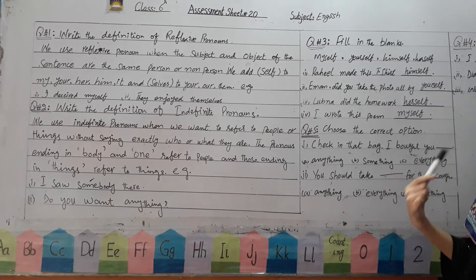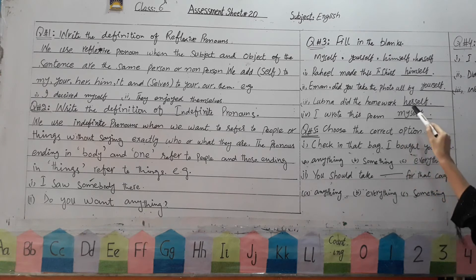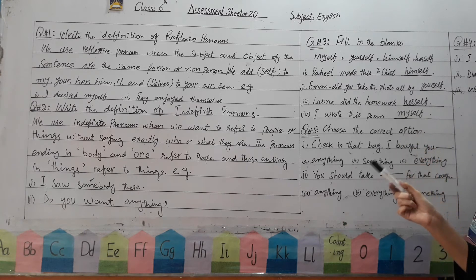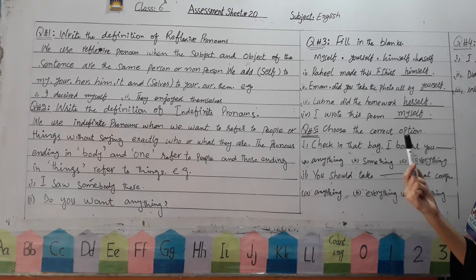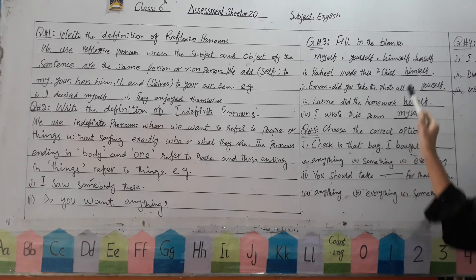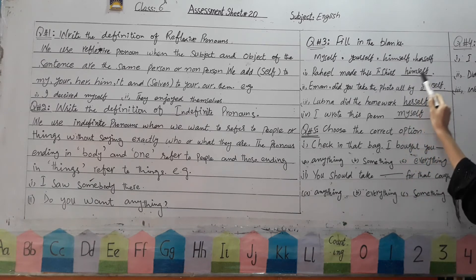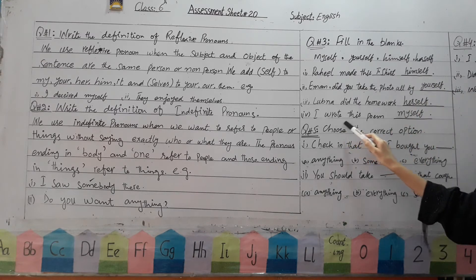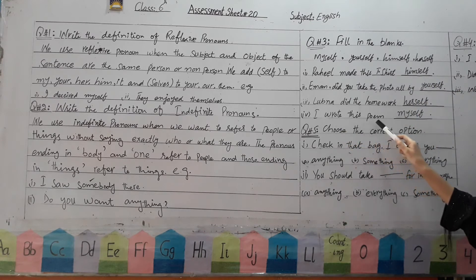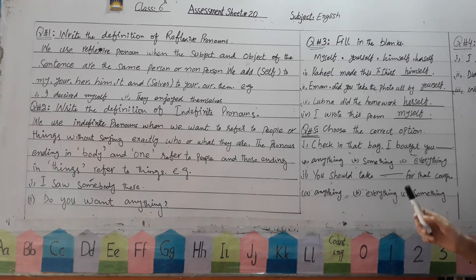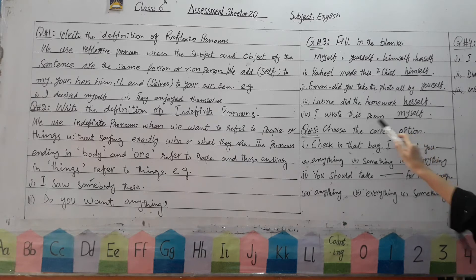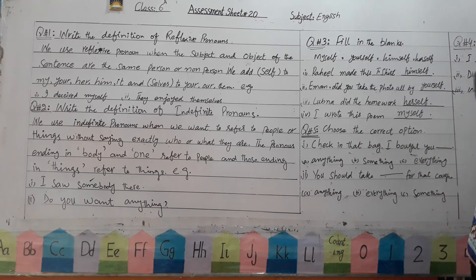Lubna did the homework ___. Lubna is 'she', a girl, so she did her work herself — the answer is 'herself'. For girls or 'she' we use 'her', and for boys or 'he' we use 'him'. Last: I wrote this poem ___. With 'I' we use 'myself'. I wrote this poem myself.